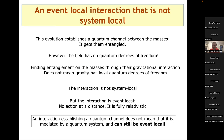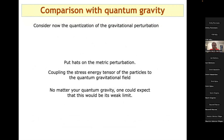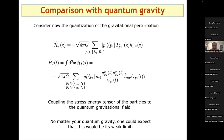Now let's consider the second model: gravity truly quantum, described by a QFT. Since we're dealing with linear gravity, canonical quantization of the gravitational perturbation h_μν is straightforward. We couple the stress-energy tensor of the particles to the quantum gravitational field. Regardless of one's favorite quantum gravity theory, linear quantum gravity should work in the weak gravity limit as a linearization of Einstein's equations.